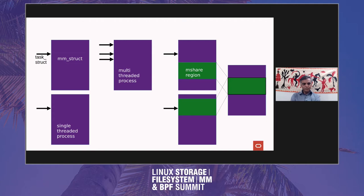In the middle there, we have a multi-threaded process. We all understand what a multi-threaded process is — we've got three task structs, each of them pointing to a different part of the process because we're all executing in different parts of the multi-threaded process address space. The new stuff is on the right. We have two independent MM structs, each happens to be single-threaded — they don't have to be, they could be multi-threaded. But they have this M-Share region, and this M-Share region points off into a third MM struct which has no task structs pointing to it. It's not a thread; it has no threads.